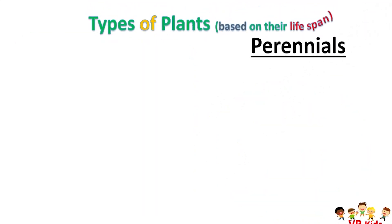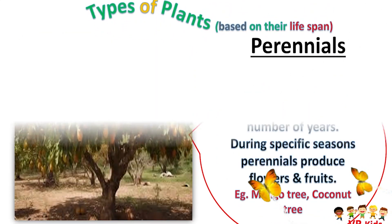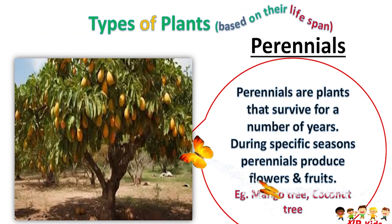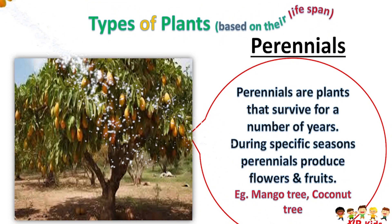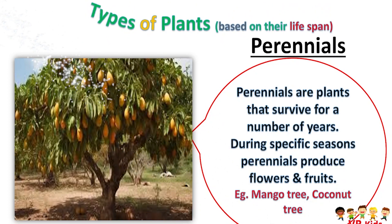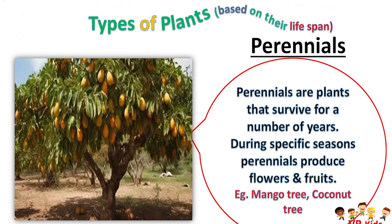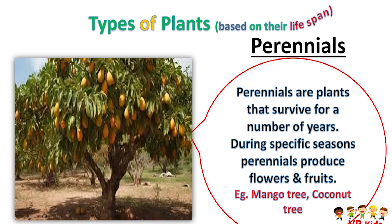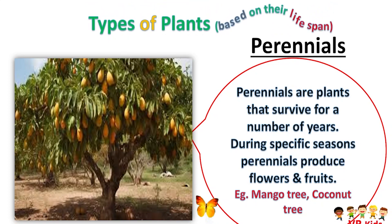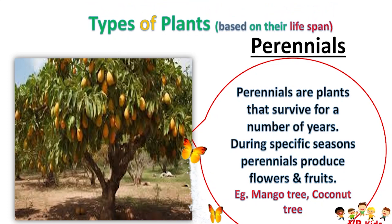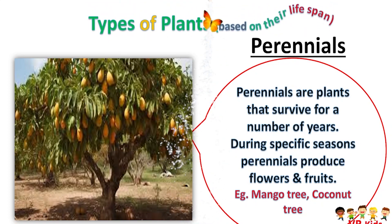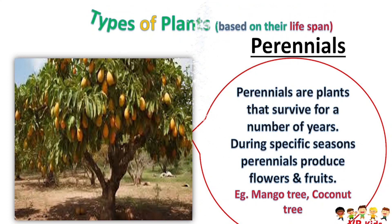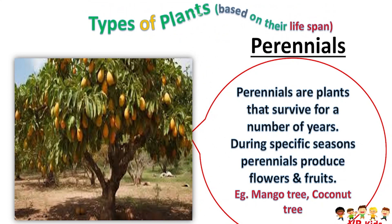Last, perennials. Perennials are plants that survive for a number of years. During specific seasons, perennials produce flowers and fruits. Examples of perennials: mango tree and coconut tree.